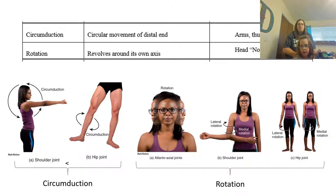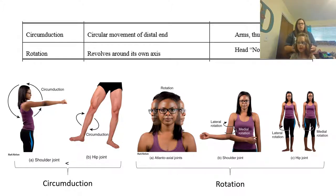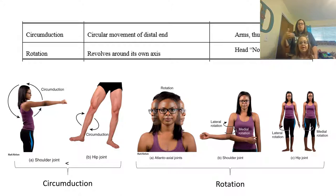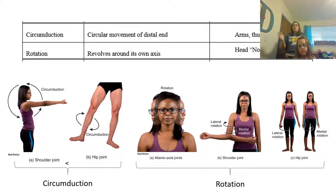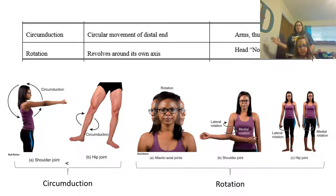We then see rotation. Rotation is going to be where it revolves on an axis. This is when you say no — when you put your head side to side, that's going to be a rotation. We also see that you can do a rotation of your leg, where you pull your toes in versus out with your hip. And we can also do a rotation with your arm — if your elbow is flexed and put at the side, you can rotate it in and out.